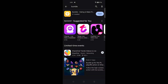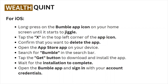For iOS: long press the Bumble app icon on your home screen until it starts to jiggle. Tap the X in the top left corner of the app icon and confirm that you want to delete the app. Then open the App Store, search for Bumble, tap the Get button to download and install the app, wait for installation to complete, and sign in with your account credentials.